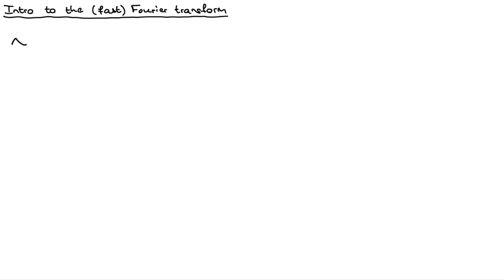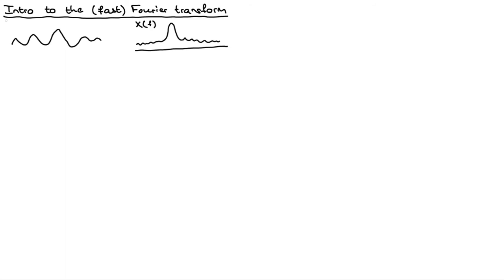Let's say we've got some waveform — this is something traveling through the air, and maybe it looks something like this, where basically we've got time running along this axis. What we can do is look at the spectrum of the signal, which tells us basically what the frequency content of this signal is. Let's say the spectrum looks something like this — on this axis we've got frequency. So this is a function of frequency, and over here we've got the signal in the time domain. Going from the time-domain signal to the spectrum is something called the Fourier transform — they're a little pair.